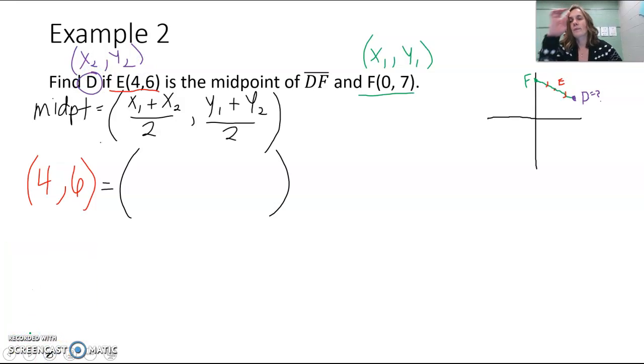Going back to our formula, we have (4,6) our midpoint and we have one of our endpoints F. We're going to call that x₁,y₁, and D we don't know is x₂,y₂.